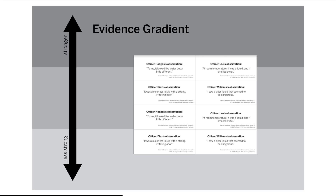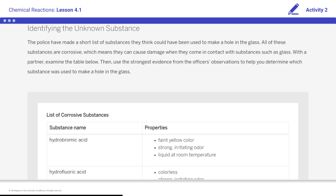Here are some conclusions we can make from our sorting. Officer Diaz made very detailed observations, which included specific details about the color, smell, and phase of the substance. Officer Hodges and Williams did not make very detailed observations, because their observations included only a few specific details about the substance. Based on these observations, there is strong evidence that the unknown substance is a colorless liquid at room temperature with a strong, irritating odor. The police have made a short list of substances they think could have been used to make a hole in the glass.